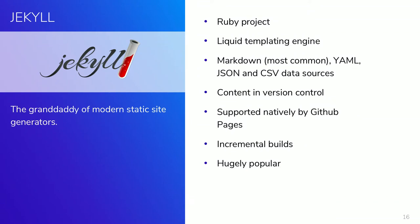Jekyll was the first project that introduced me to this modern take on static site generators. It's a Ruby project that uses a templating engine called Liquid. Typically the data is going to be Markdown, but it can also look at YAML, JSON, and CSV data sources. It introduced me to the concept of having content in version control — your Markdown content committed to source control rather than in a database. It's supported natively by GitHub Pages, which really helped its popularity, and it supports incremental builds — only processing content that has changed.